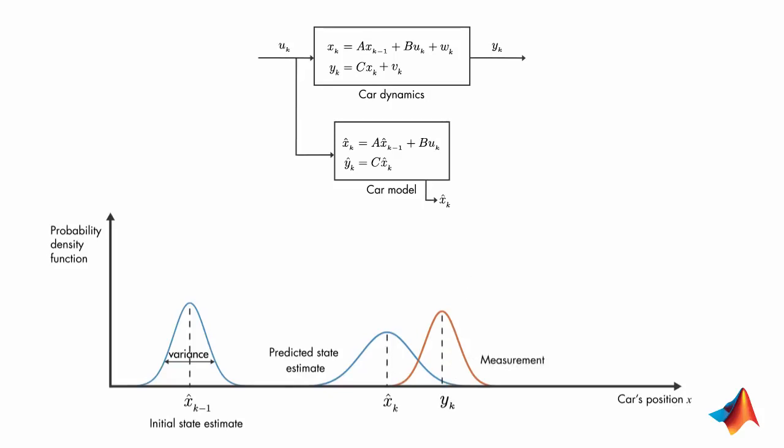Here, the variance represents the uncertainty in the noisy measurement. Again, the true position can be anywhere around the mean.